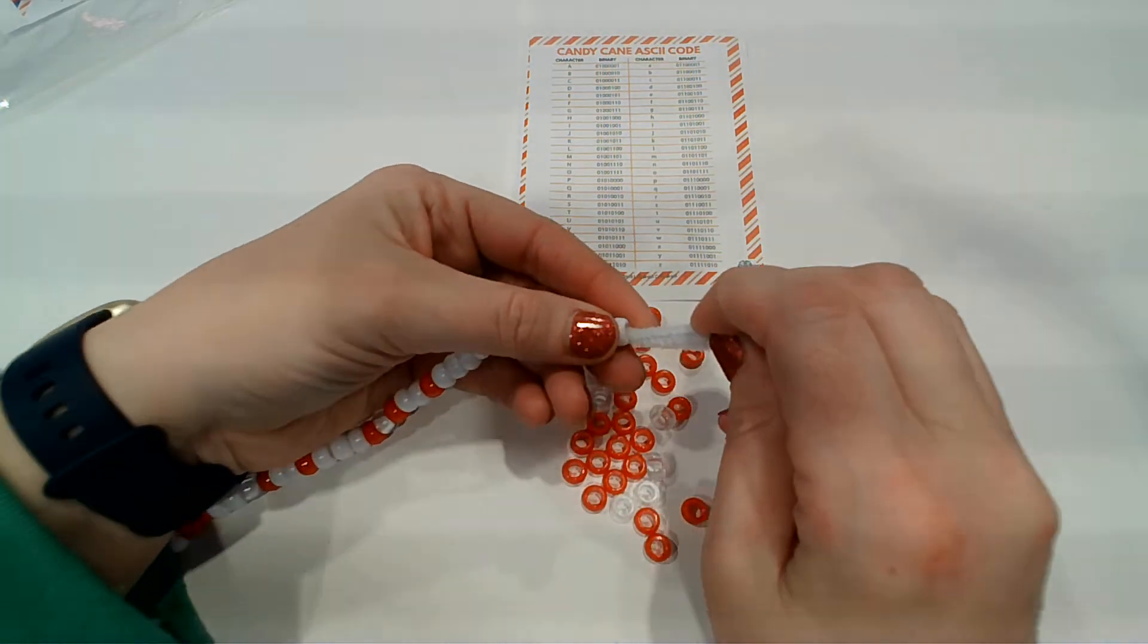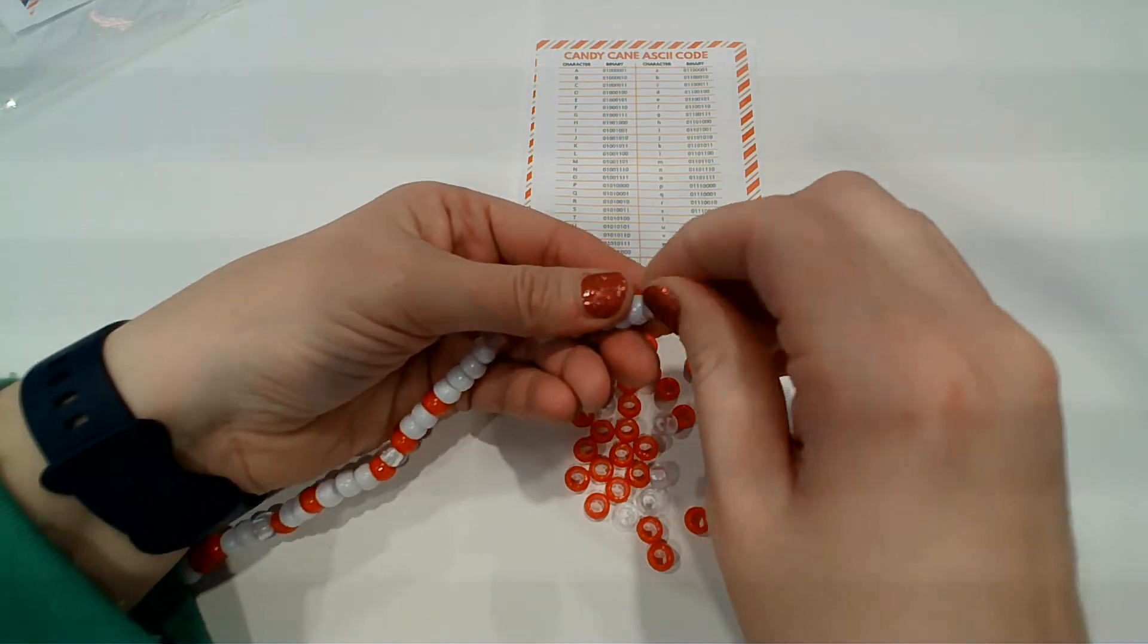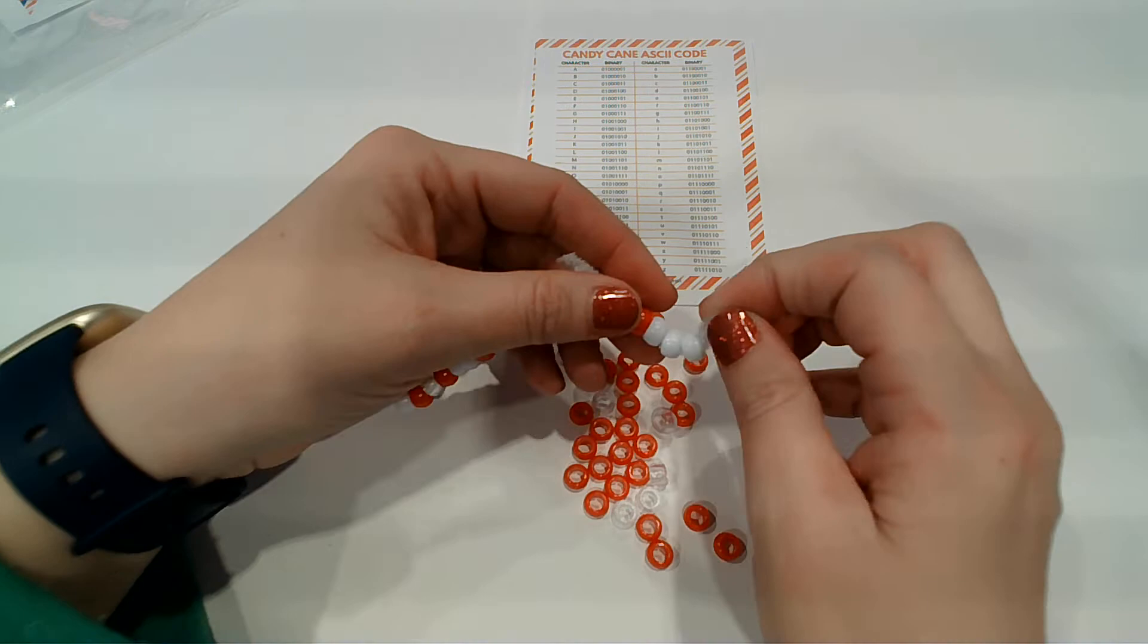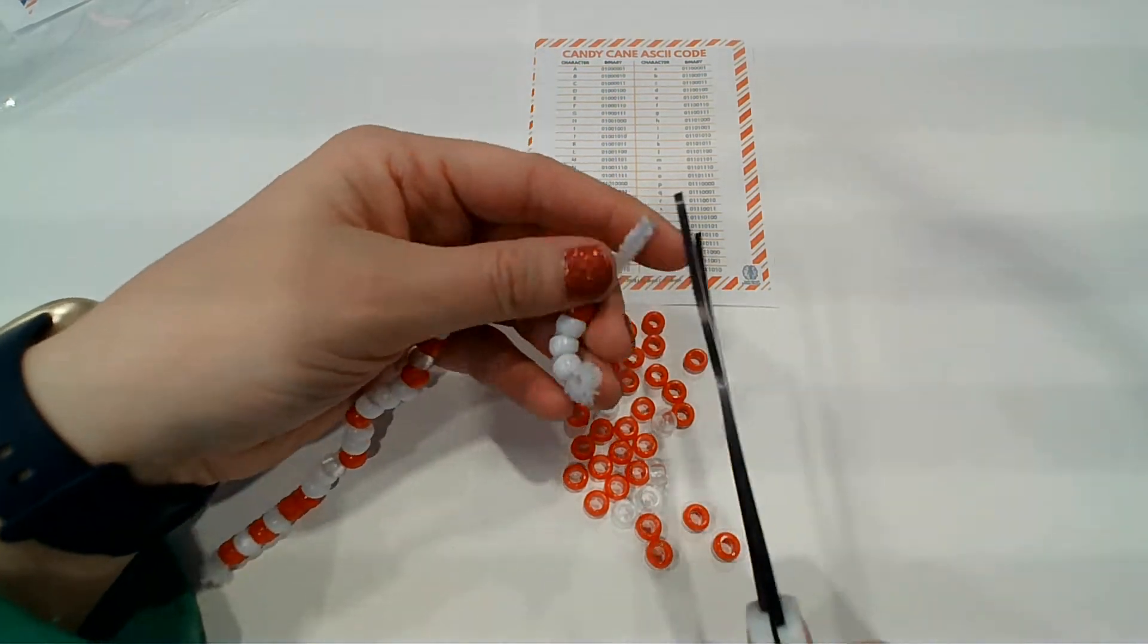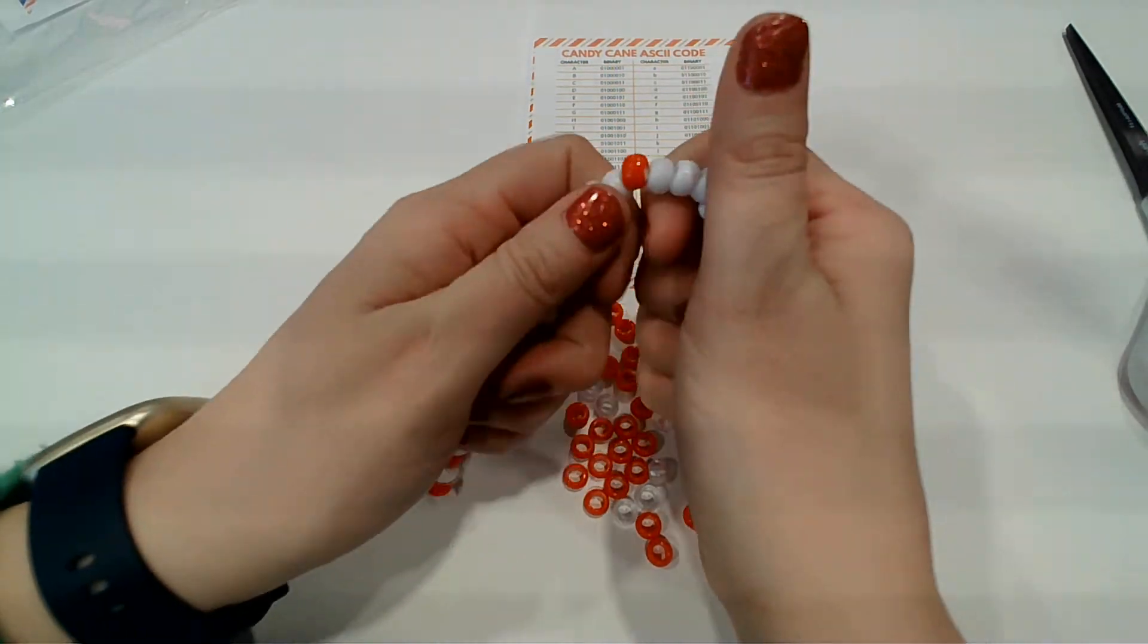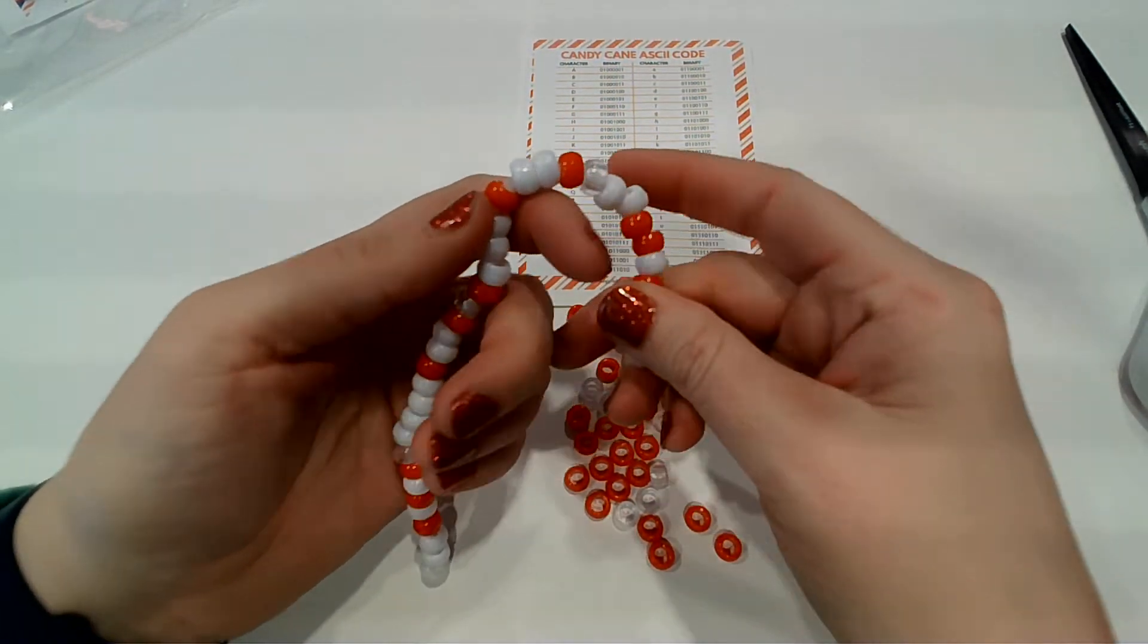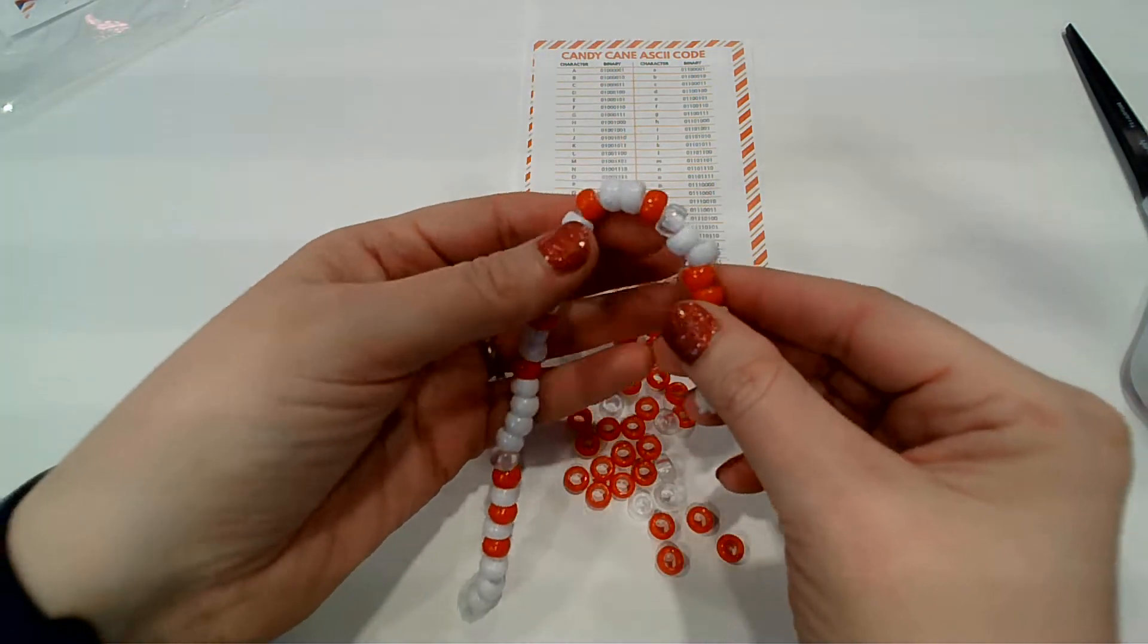Now I'm going to bend this over and stick the remainder of the pipe cleaner in there. Just tug on that a little bit. And you want to leave a little bit so that way they don't all fall off. And I'm just going to take my scissors and clip that part off. Ta-da! Now we have the word snow on our candy cane.